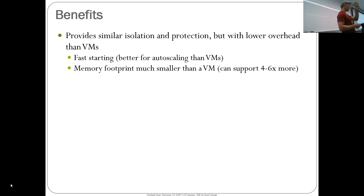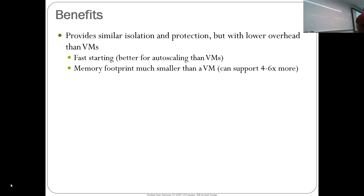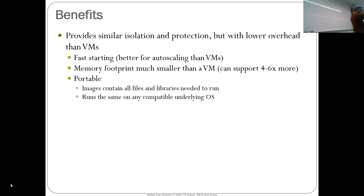AWS, Azure, and Google Cloud all measure their container cold start times, and they need to be under basically five seconds — otherwise you're considered slow. The memory footprint is much smaller than a VM because there is only one OS, allocating one gig of memory rather than every individual VM's OS. It's portable: I can run the same container in my office, on Google Cloud, on AWS, and on Azure. Azure is actually one of the largest Linux OS runners, even though it's Microsoft.